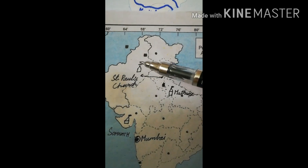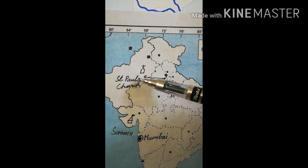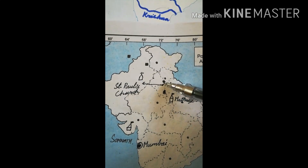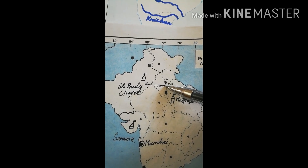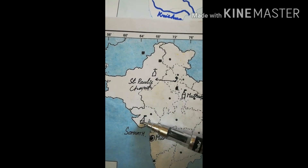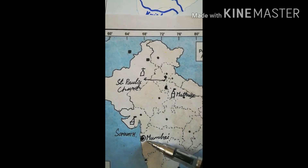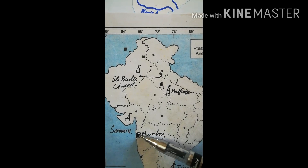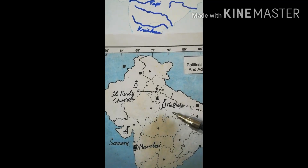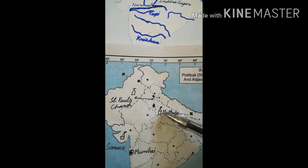I have drawn the church symbol here. This church is St. Paul's Church in Ambala, Haryana. The Somnath temple is in Gujarat. This symbol represents the capital of Maharashtra — Mumbai. And this is the Mathura temple in Uttar Pradesh. So these are some of the symbols used on maps.